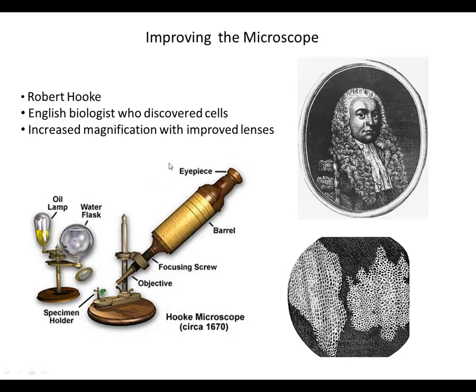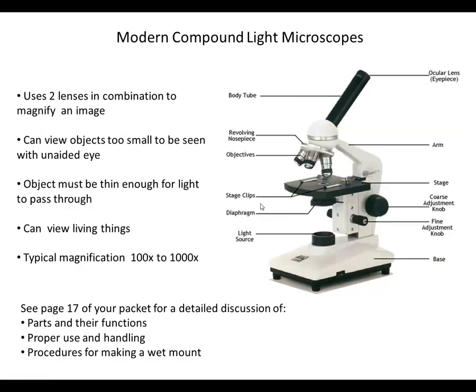Robert Hooke was the person most credited with discovering and naming cells, and he's also the scientist responsible for the first part of cell theory: that all living things are made of cells. When we look at modern compound light microscopes, they've obviously come a very long way. This is the kind of microscope we use in class, and so the parts and their functions will become very familiar to you over the next week or so.